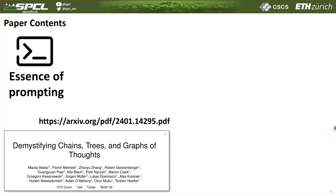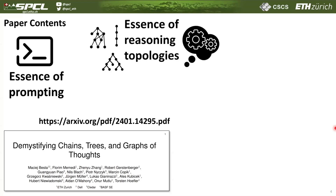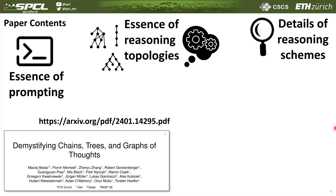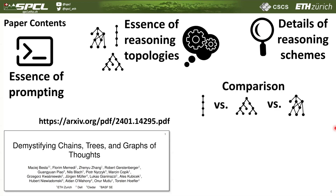In this paper, after taking a look at this evolution, we first extract the essence of prompting. Then we follow up and do the same for the reasoning topologies — namely, what are the fundamental building blocks and what is the essence of structure-enhanced prompting. After that, we analyze in detail several of these reasoning schemes, compare them, and try to extract some insights about the fundamental differences between chains, trees, and graphs of thoughts.